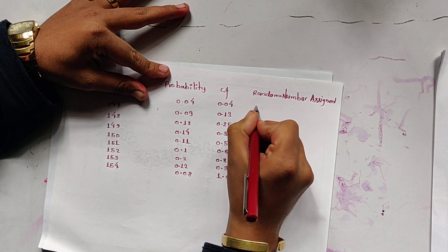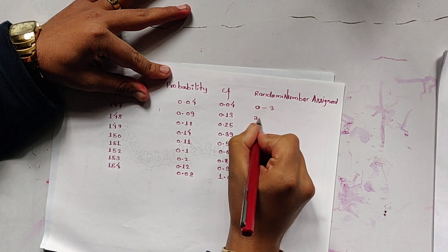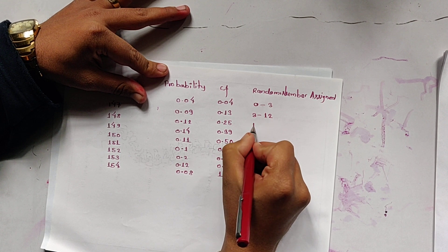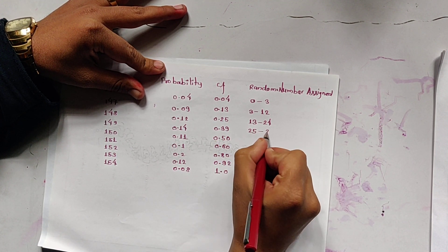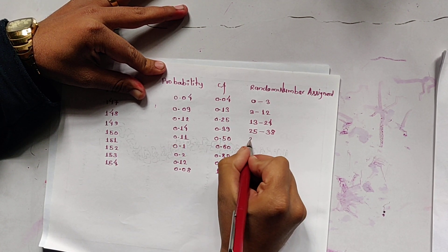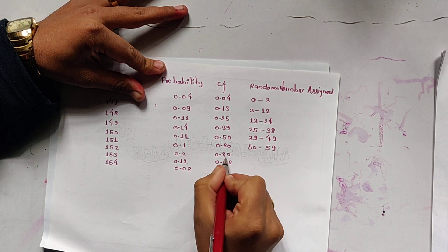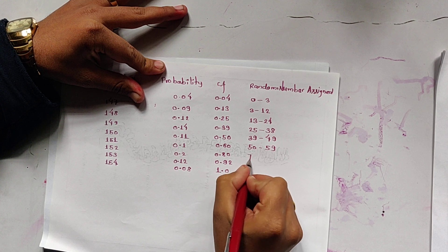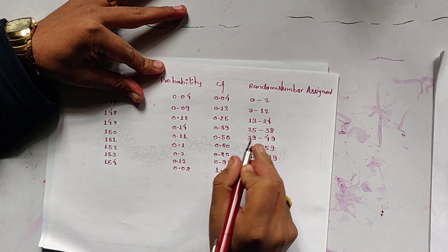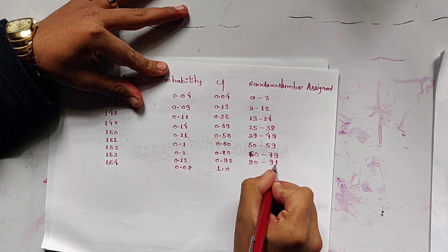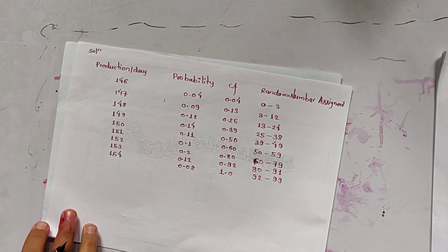Now we assign random numbers according to cumulative frequency: 146→00 to 03, 147→04 to 12, 148→13 to 24, 149→25 to 38, 150→39 to 49, 151→50 to 59, 152→60 to 79, 153→80 to 91, 154→92 to 99.